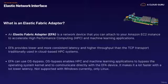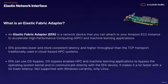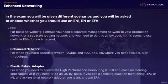The Elastic Fabric Adapter, or EFA, is a network device you can attach to your EC2 instance to accelerate high-performance computing, or HPC, and machine learning applications. EFAs provide lower and more consistent latency and higher throughput than TCP transport traditionally used in cloud-based HPC systems. EFA can also use OS Bypass — which enables HPC and machine learning applications to bypass the operating system kernel and communicate directly with the EFA device, making it much faster with lower latency. However, OS Bypass is not supported on Windows; it is only supported on Linux.